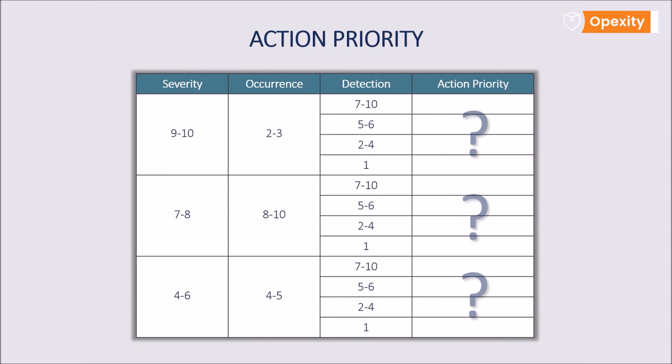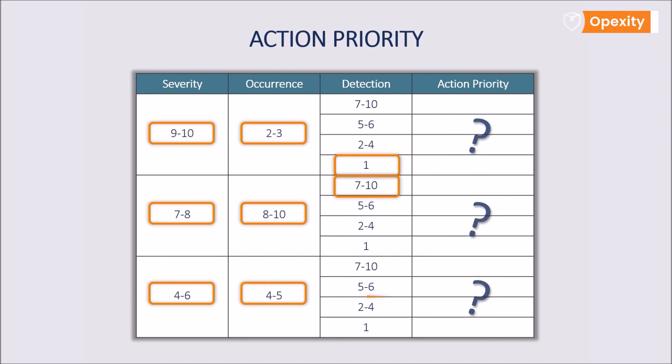Now take a look at the presentation. Here you will find elements of the action priority tables. Try to read out the action priority with regard to severity, occurrence, and detection. Severity equals 9, occurrence equals 2, detection equals 1. Severity equals 8, occurrence equals 8, detection equals 8. Severity equals 4, occurrence equals 5, detection equals 2.